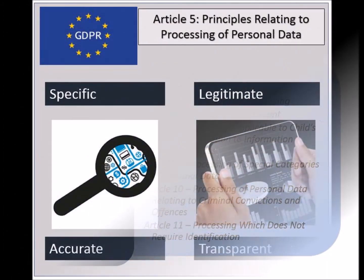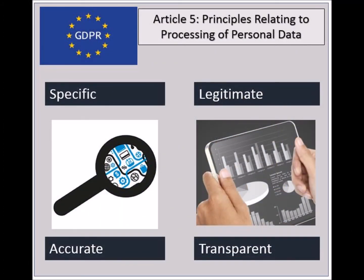The first article of this chapter, and the fifth overall, is called Principles relating to processing of personal data. The objective of this article is to state how the personal data should be processed, and the obligations of the controller of processing.